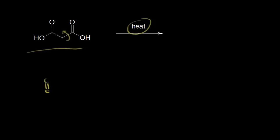Let me go ahead and draw in this carboxylic acid on the left, and then we're going to have a carboxylic acid on the right too. This time, the carbonyl is going to be going to the right. Let me put in those electrons, and the OH would be going to the left. So there we have it.